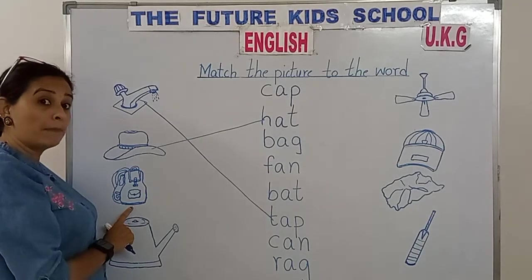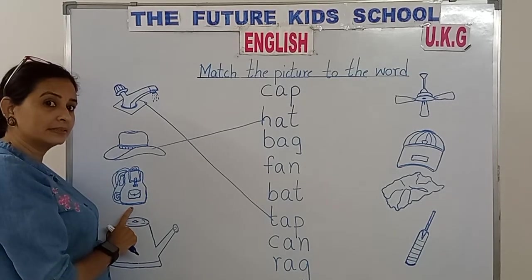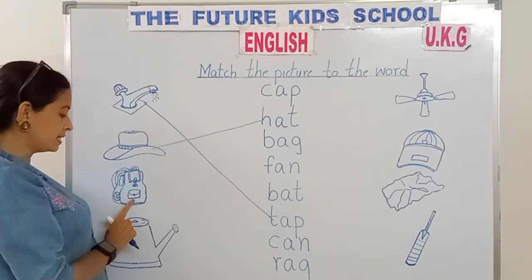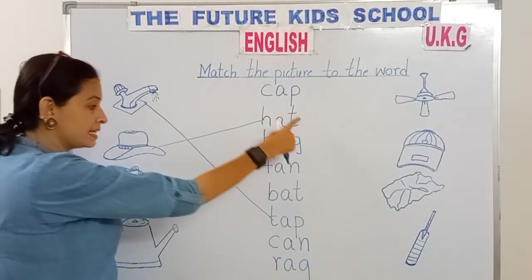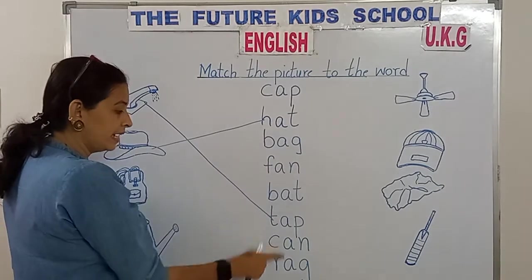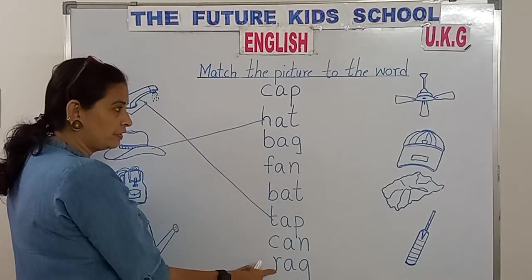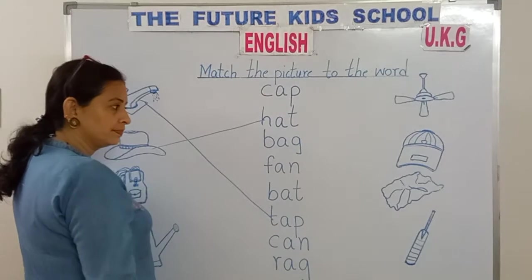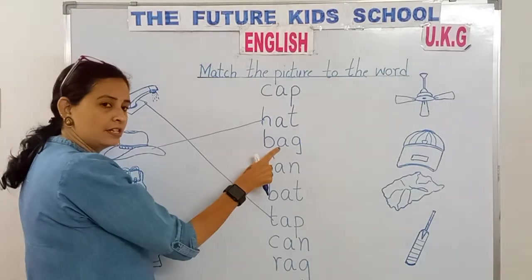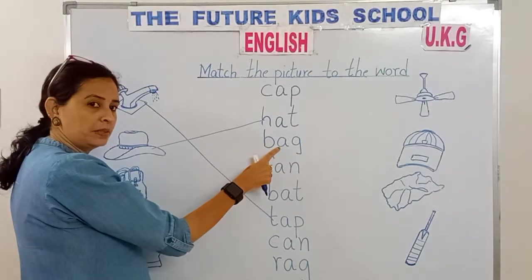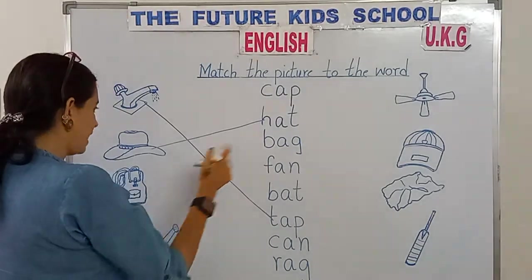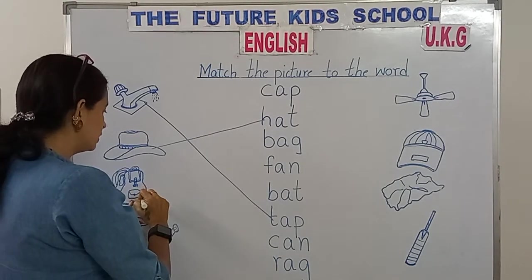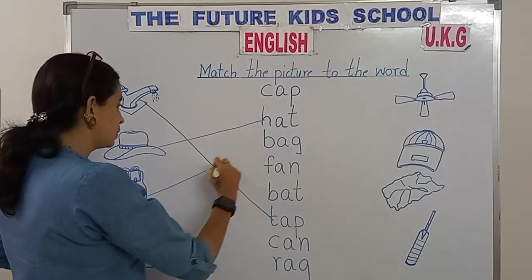This is a bag. B-A-G spells bag. Now let's see where's the word bag. Can you show me children? B-A-G bag. Yes, here is the word bag. B-A-G bag. So match the picture of the bag to its word.